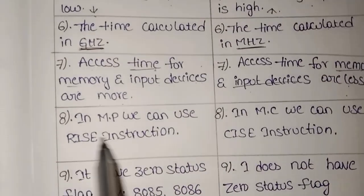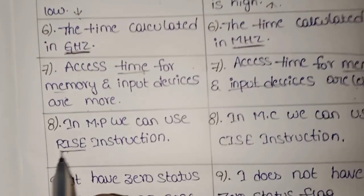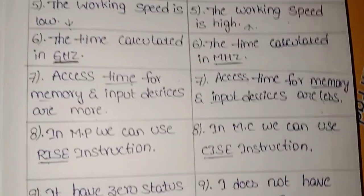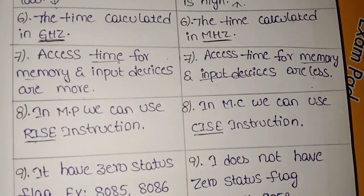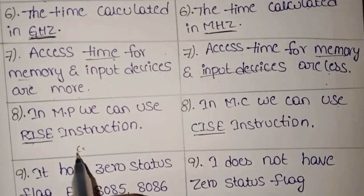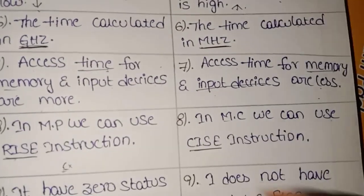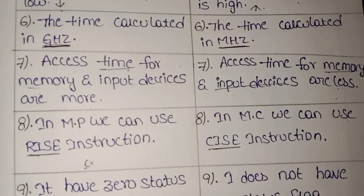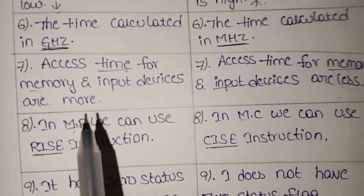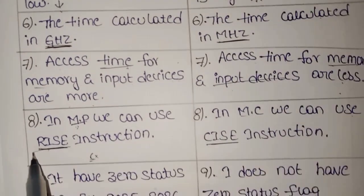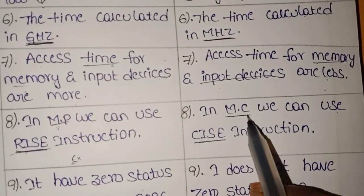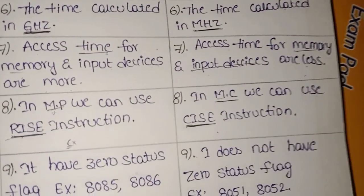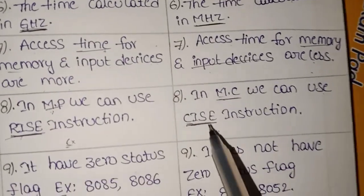In microprocessors, we use RISC instructions. In microcontrollers, we use CISC instructions. Every device has a set of instructions. If we run a microprocessor, we can use RISC instructions. If we run a microcontroller and device, we use CISC instructions.